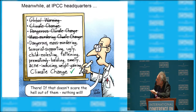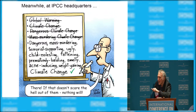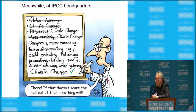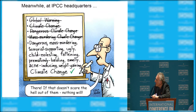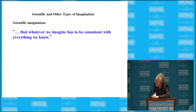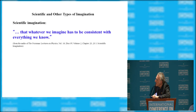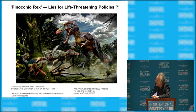This person is saying global warming isn't described as dangerous enough — you have to call it a 'dangerous mass-murdering, terrorist-supporting, ugly' something in order to scare people. So the messages get more and more shrill and more and more absurd as the years go on. Scientific imagination is different from regular imagination — you simply can't throw something out there. Scientific imagination has to be consistent with everything else you know. This is what's happening in politics: certain lies create life-threatening policies.